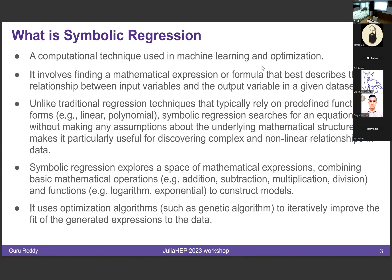What is symbolic regression? Symbolic regression is a technique used in machine learning and optimization. It takes data and tries to find a function that best fits the data, describing the relationship between input variables and the output. Unlike traditional regression techniques that require a predefined function, symbolic regression starts from a given pool of operators and then builds the function by itself. To do so, it uses optimization algorithms like genetic algorithms to improve the fit.